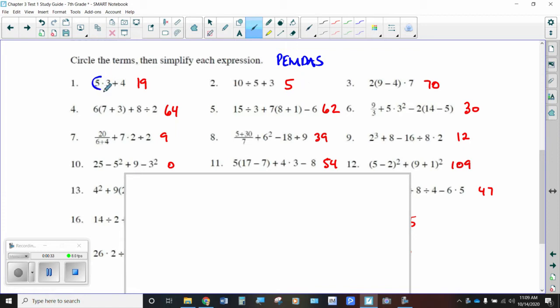Circling the terms, the terms are the parts that get added together. So this is one complete term. That's one complete term. So when you simplify 5 times 3, that gives you 15. And then you simplify. That doesn't have to be simplified. So you end up doing 15 plus 4 is equal to 19. Here on this one, circling the terms, you would do the division first. 10 divided by 5 is 2. And then 2 plus 3 is equal to 5.